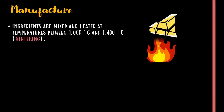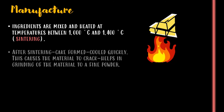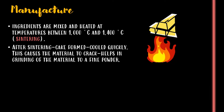Coming to the manufacture, the ingredients are mixed and heated at temperatures between 1000°C and 1400°C, which is termed sintering. After sintering, a cake is formed which is cooled quickly. This causes the material to crack and helps in grinding of the material into a fine powder.